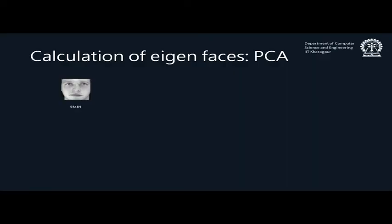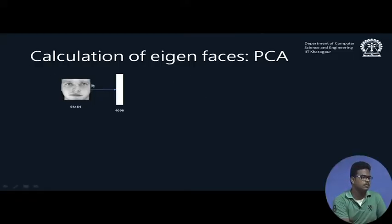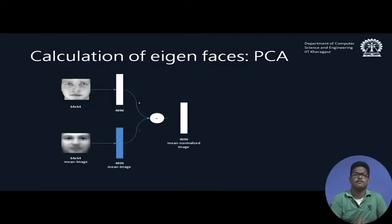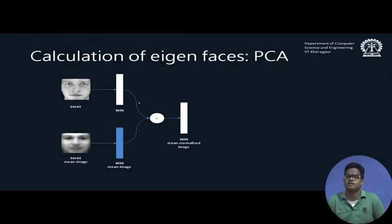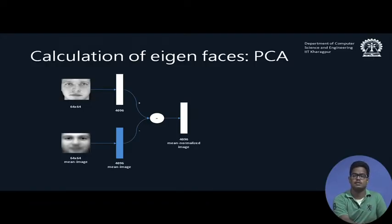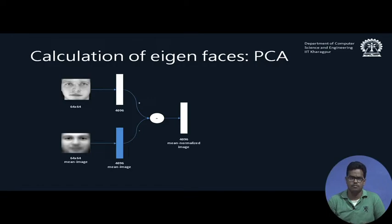Next we will see how the PCA algorithm works in detail. Given a 64×64 face, we first raster-scan the image and arrange the pixels into a vector of 4096 dimensions. We then compute the mean face by averaging all faces in the training set, convert it to a vector, and subtract it from each image to get a mean-normalized image. This is necessary for gradient descent optimization and for computing the covariance matrix, whose definition involves E[(x − μ)(x − μ)ᵀ], as covered in the theory session.